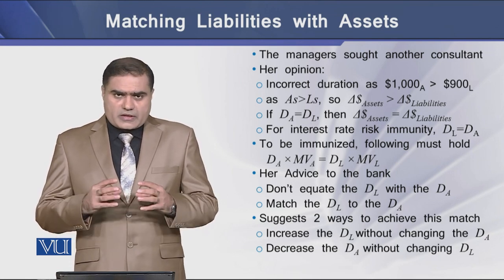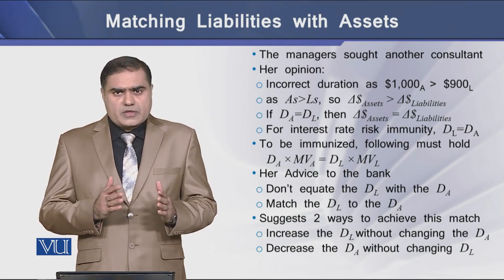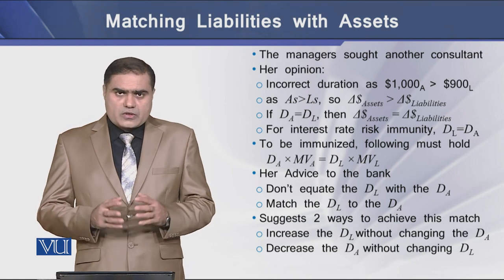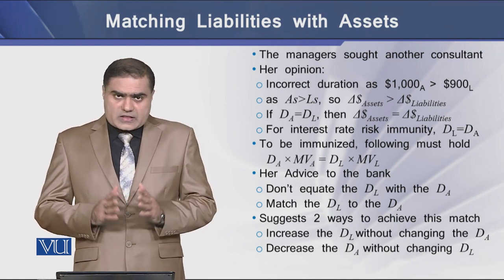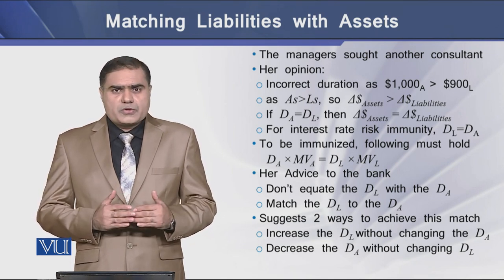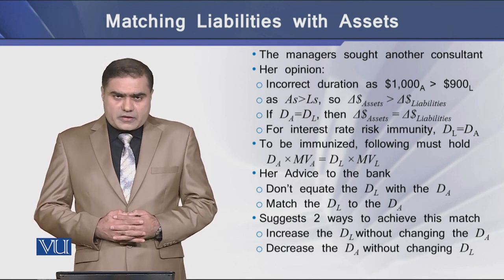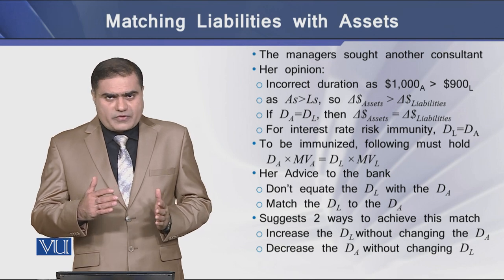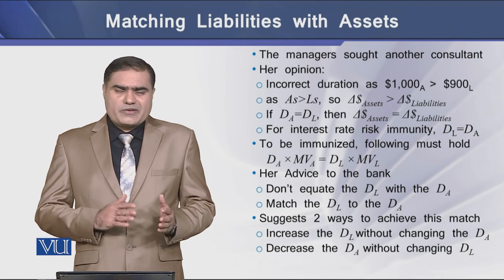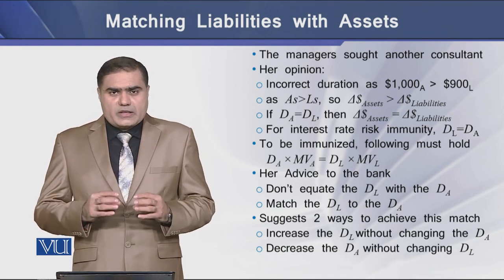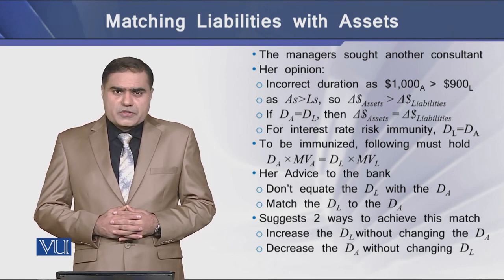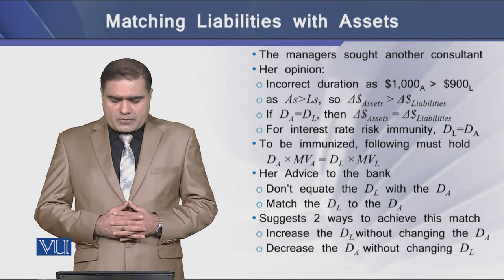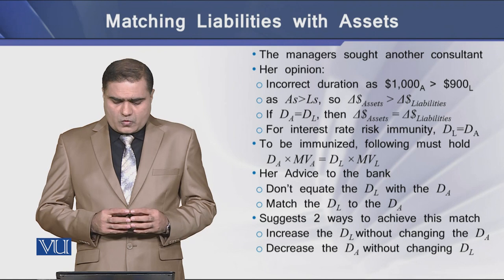For interest rate risk immunity, the duration of assets should be equal to the duration of liabilities. According to the second consultant, to be immunized against interest rate movements, the duration of assets in terms of market value should equal the duration of liabilities with reference to the market value of liabilities. His advice to the bank is: don't simply equate the duration of liabilities with the duration of assets. Rather, it is better to match the duration of liabilities to the duration of assets.